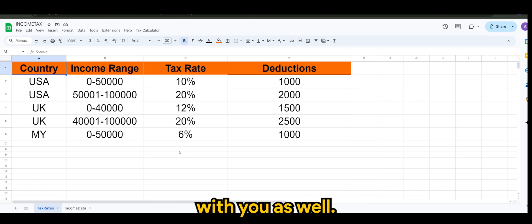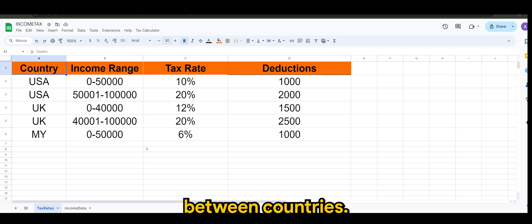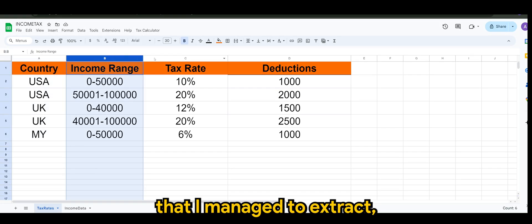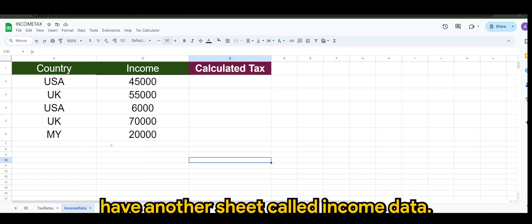So this is the use case I got. He's doing a study on the taxation between countries. This is the table that I managed to extract: country, income range, tax rate, and deduction. And I have another sheet called income data.